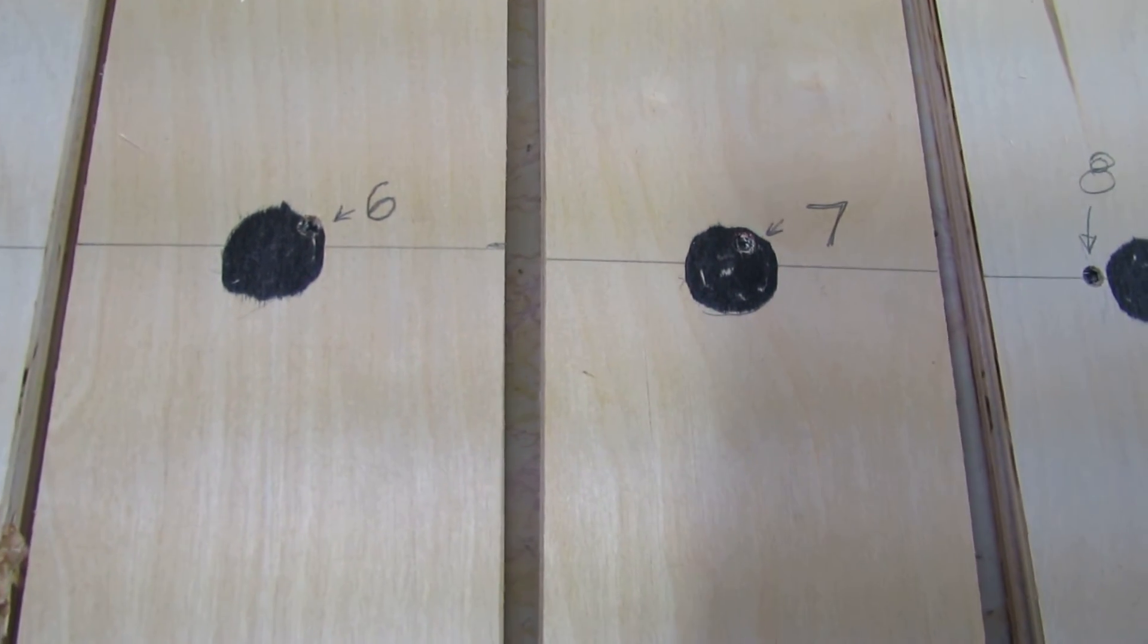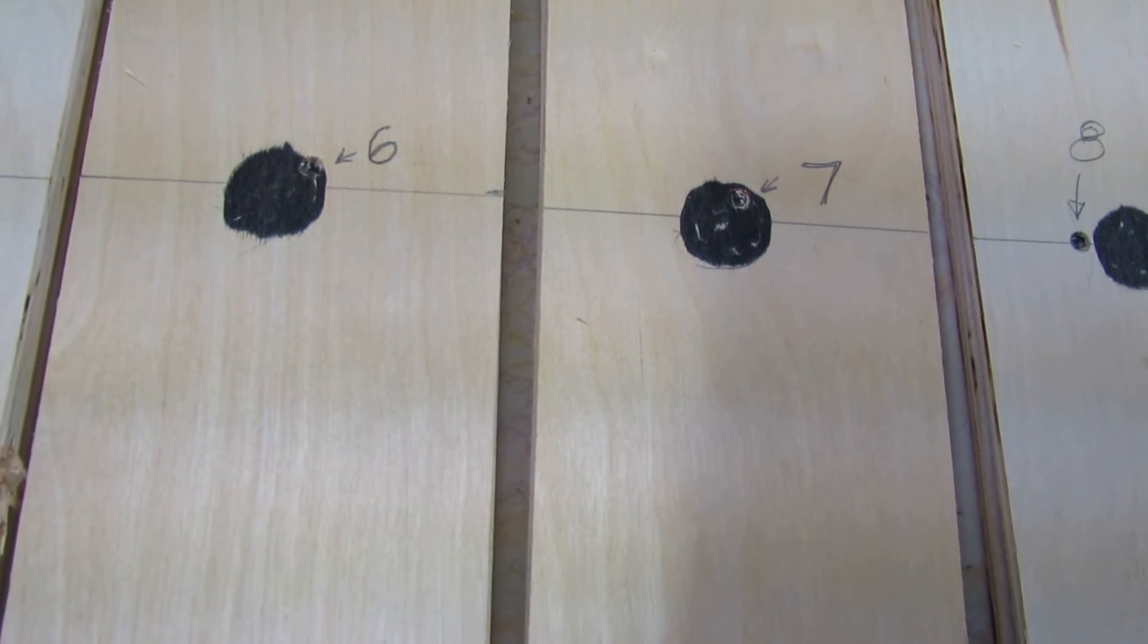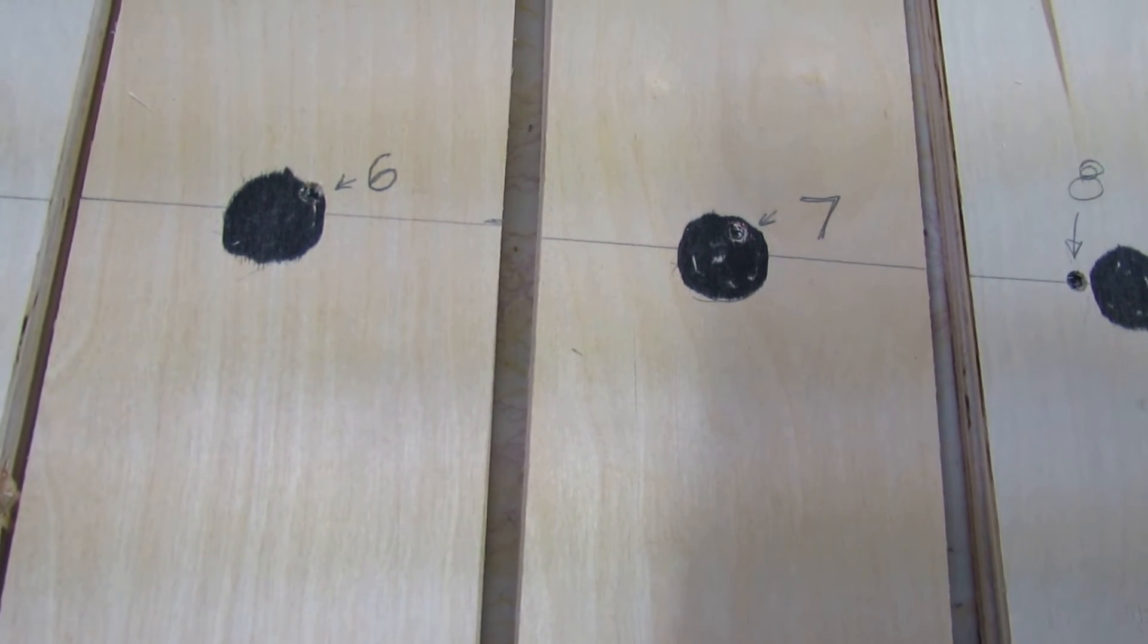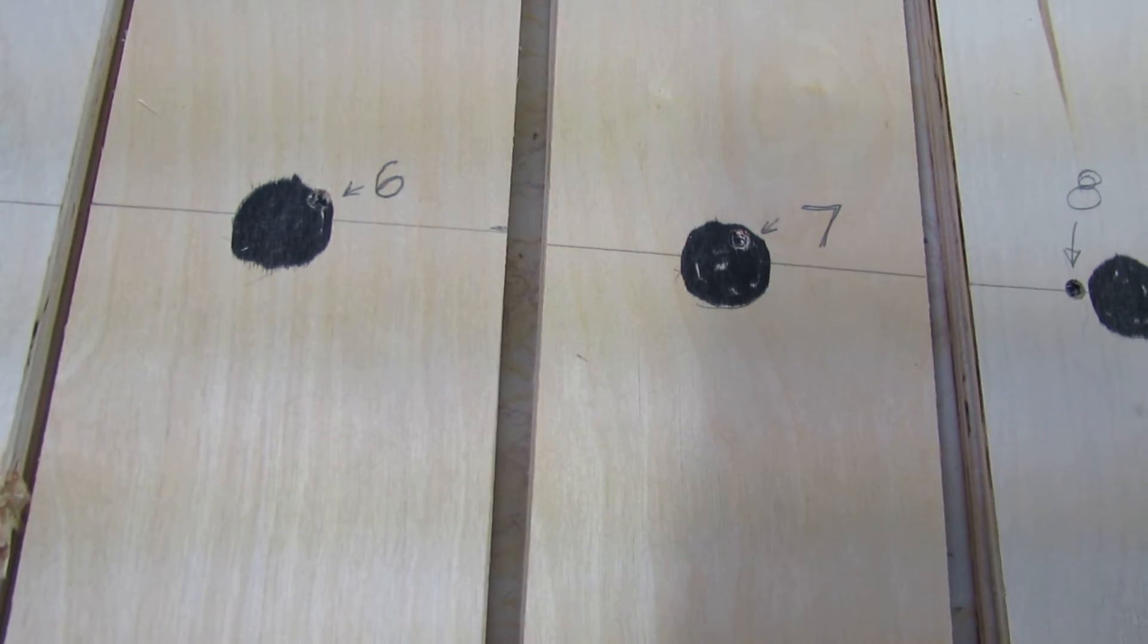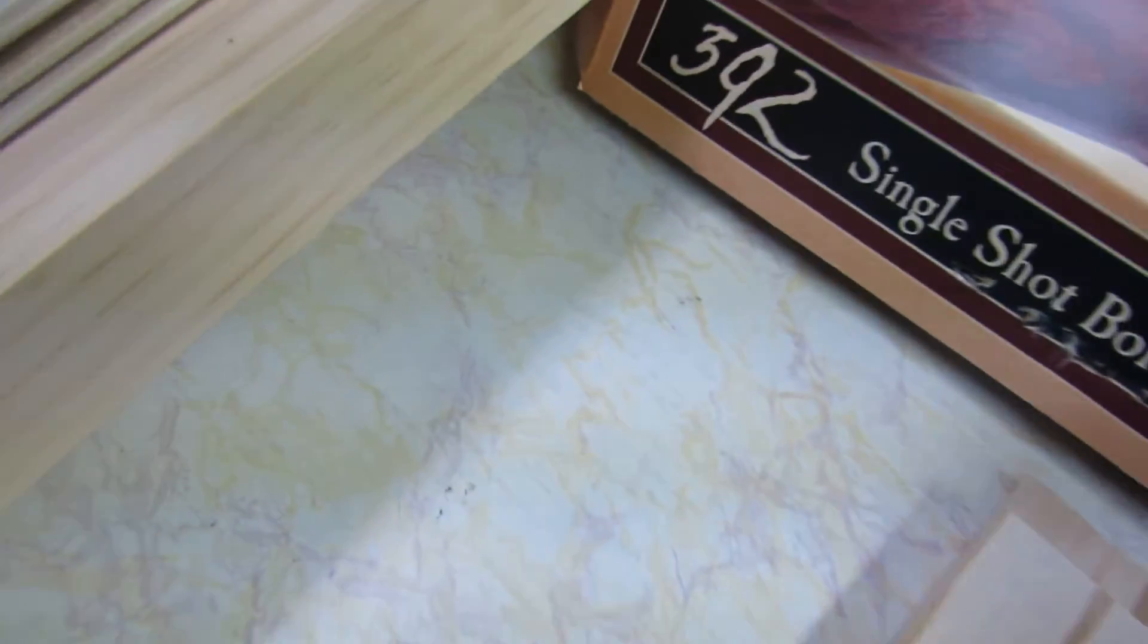One more thing about the targets. I tried to make them identical with a nickel sized bullseye six and a half inches up from the bottom. Here's my test target again to better illustrate my setup.